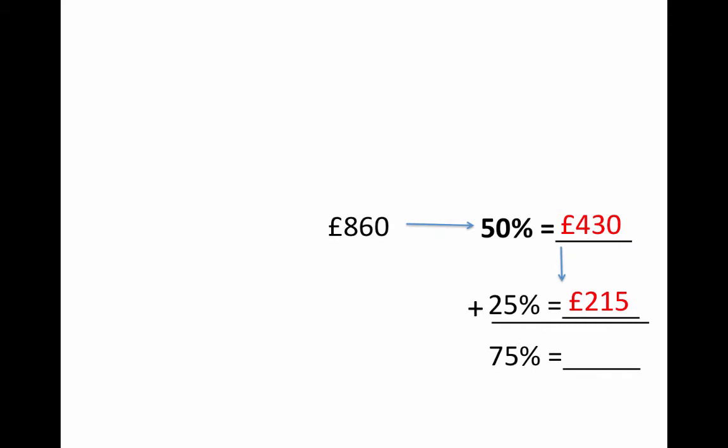When the numbers are even more horrible, it's still exactly the same method I expect my students to use. Find half of it. Again, if you halve 50%, you can find 25%. And if you add those two numbers together, you can find 75%.